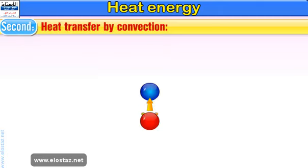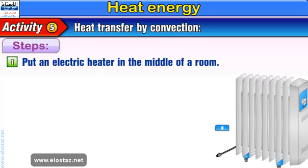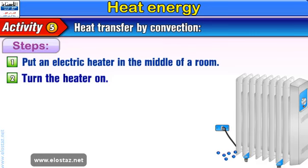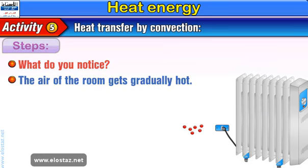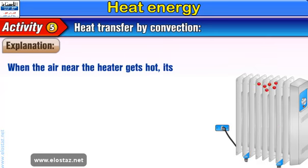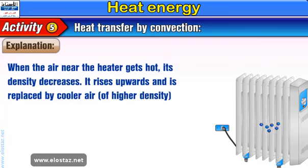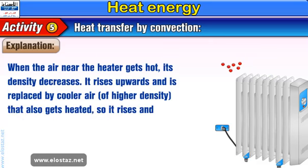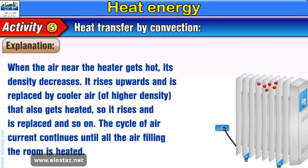Second, heat transfer by convection. Activity 5: Heat transfer by convection. Steps: 1. Put an electric heater in the middle of a room. 2. Turn the heater on. What do you notice? The air of the room gets gradually hot. Explanation: When the air near the heater gets hot, its density decreases. It rises upwards and is replaced by cooler air of higher density that also gets heated, so it rises and is replaced and so on. The cycle of air current continues until all the air filling the room is heated.